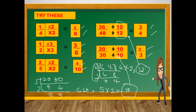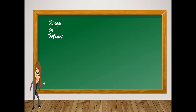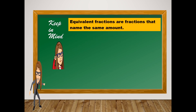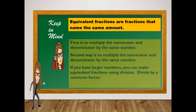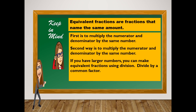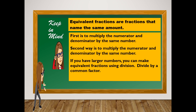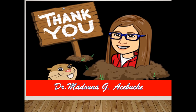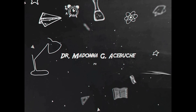Keep in mind: equivalent fractions are fractions that name the same amount. The two ways to create an equivalent fraction are: first, multiply the numerator and denominator by the same number; second, divide the numerator and denominator by a common factor for larger numbers. I hope you learned something today. This is Mama Do — thank you and see you on our next lesson. Bye!